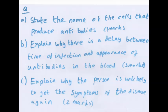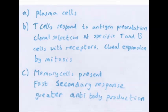Questions. State the name of the cells that produce antibodies. Explain why there is a delay between time of infection and appearance of antibodies in the blood. And explain why the person is unlikely to get the symptoms of the disease again. And the answers are: A. Plasma cells, not B lymphocytes. Plasma cells.